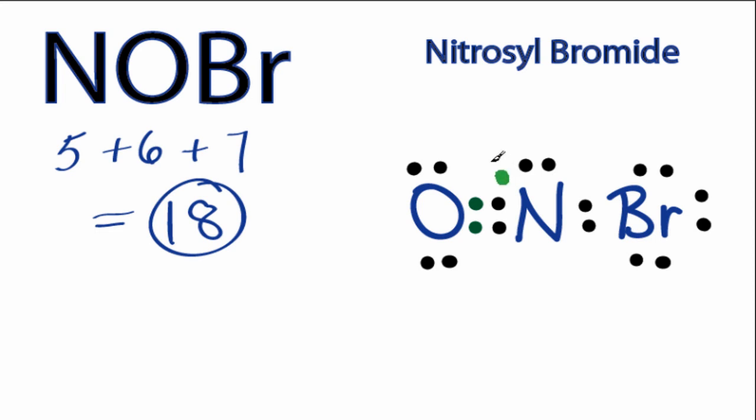So we can see that the Oxygen still has 8 valence electrons, but now the Nitrogen has 8 valence electrons. So its octet is full, and the Bromine still has 8 electrons as well.